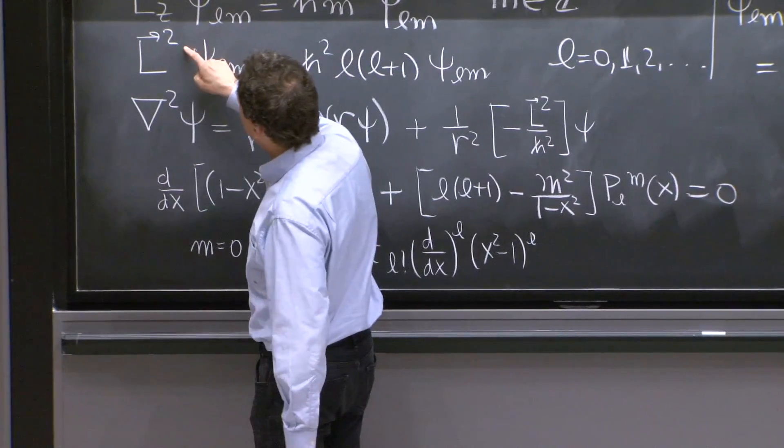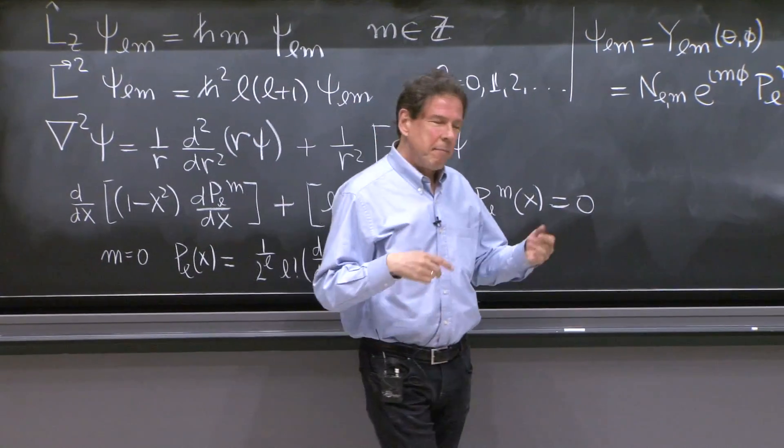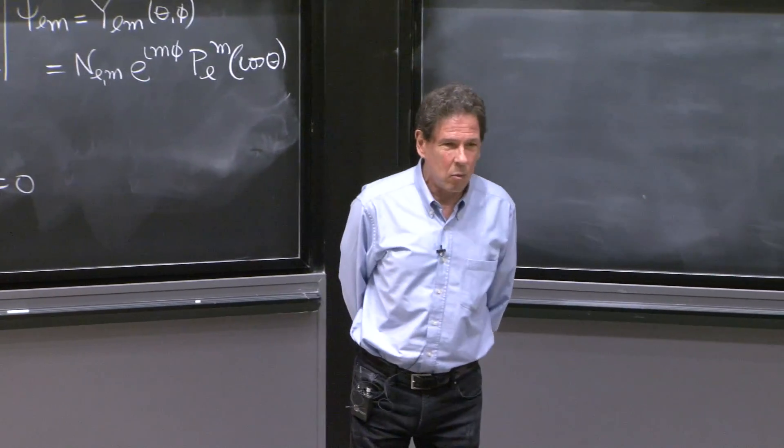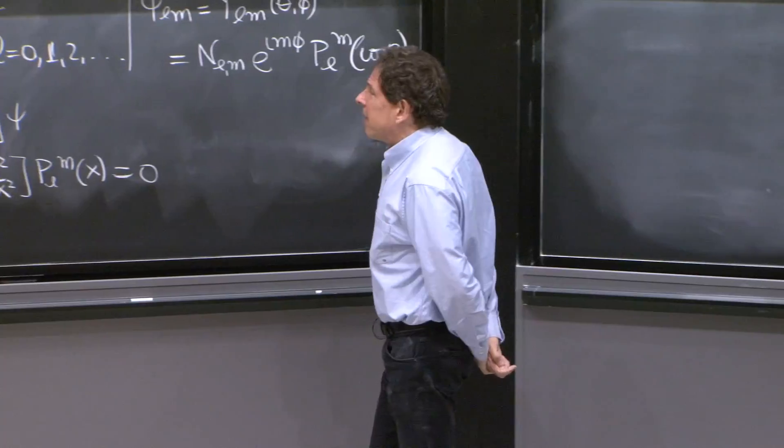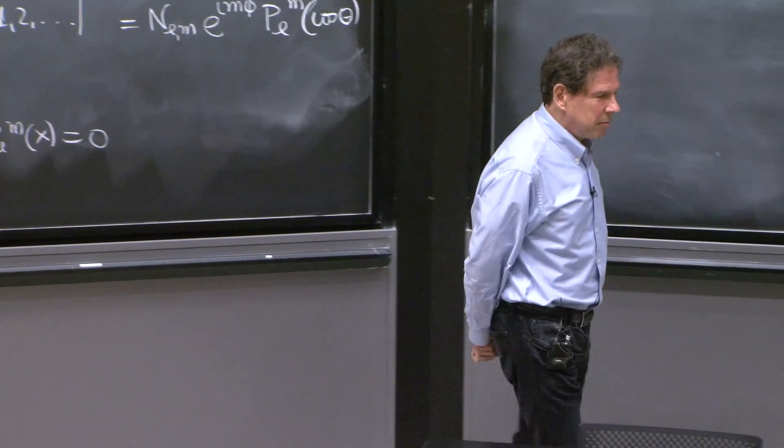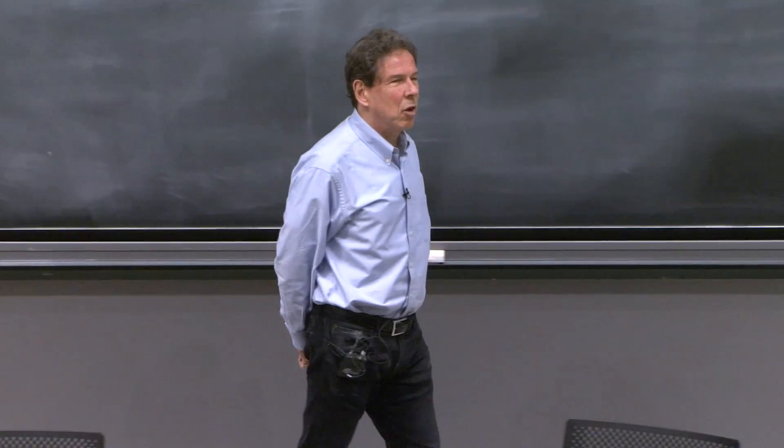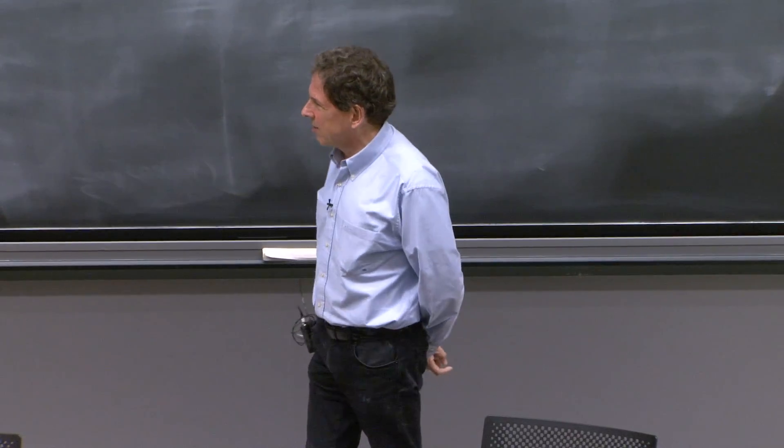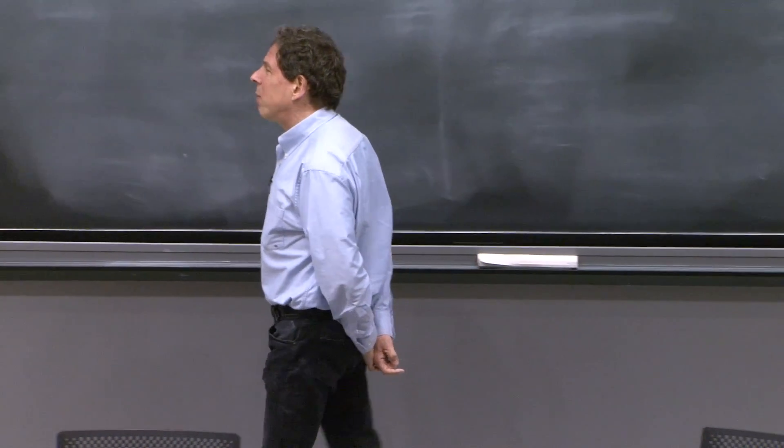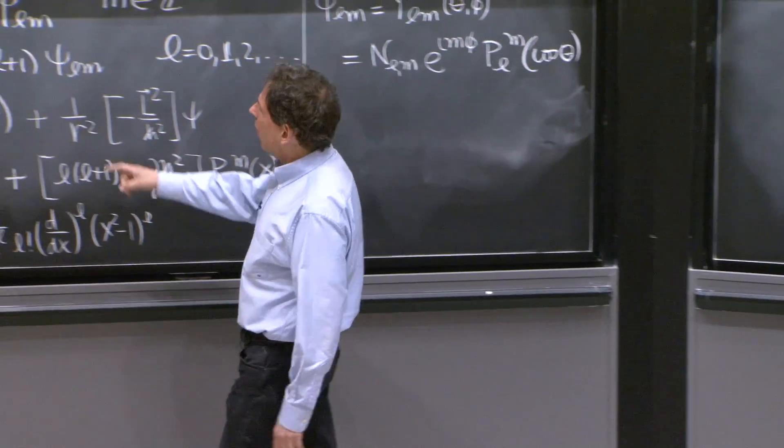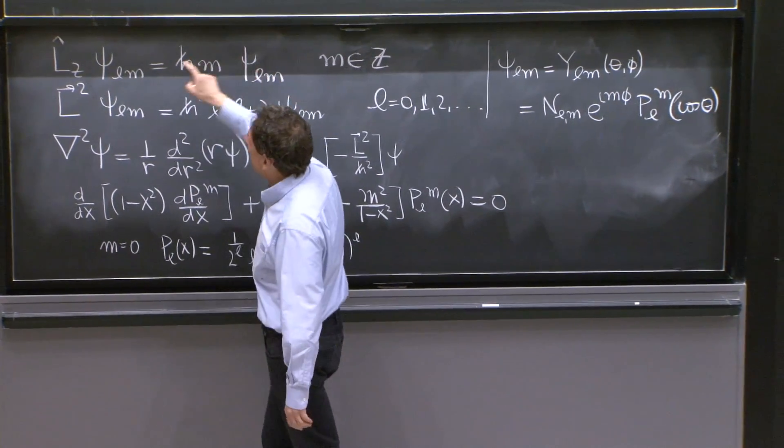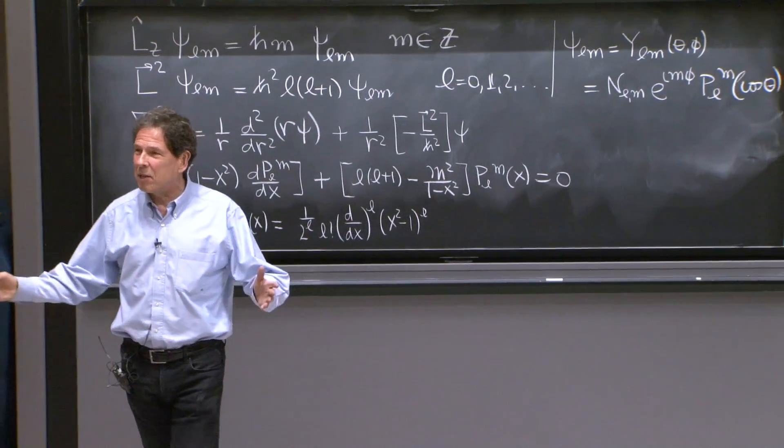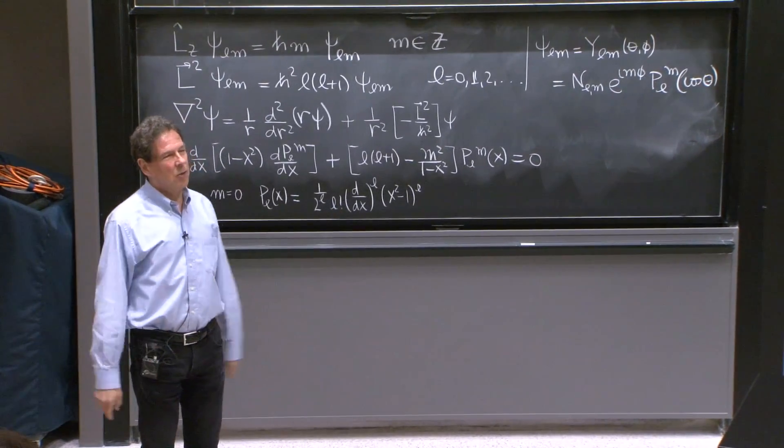You should understand this symbol. It's not a vector. It is just a single operator. L squared is, by definition, Lx times Lx plus Ly times Ly plus Lz times Lz. We showed that any component of angular momentum, be it Lx, Ly, or Lz, commutes with L squared. Given that they commute, it's a general theorem that two Hermitian operators that commute, you can find simultaneous eigenstates of those two operators. Therefore, we set up for the search of those wave functions that are simultaneous eigenstates of one of the three components of angular momentum. Everybody chooses Lz and L squared.